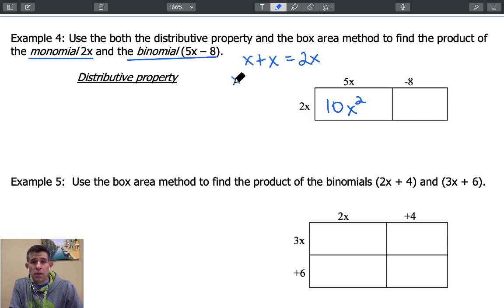However, when we multiply our variables x times x, we're increasing their exponents, so this becomes x squared. Next we have 2x times that negative 8, and that gives us negative 16x.